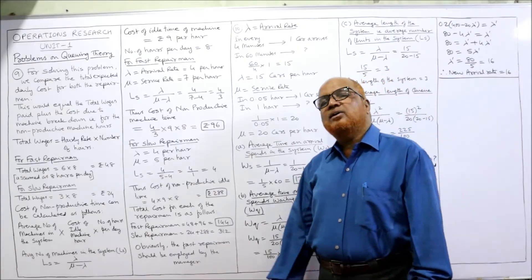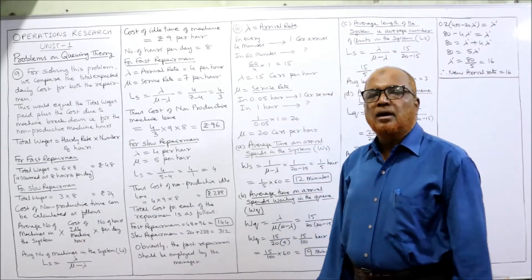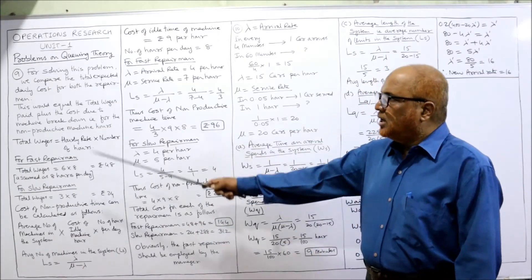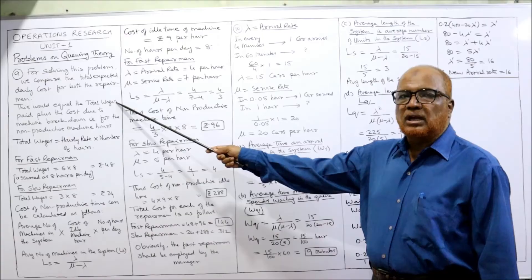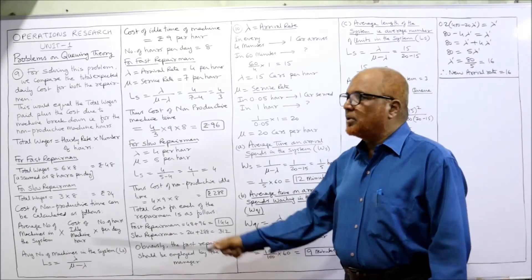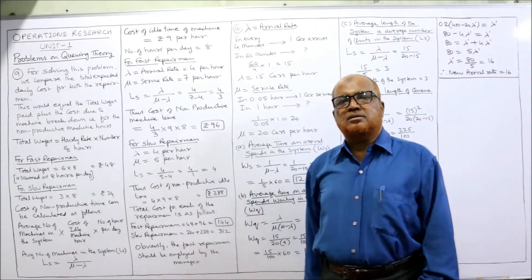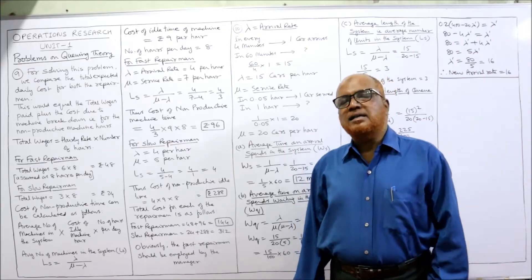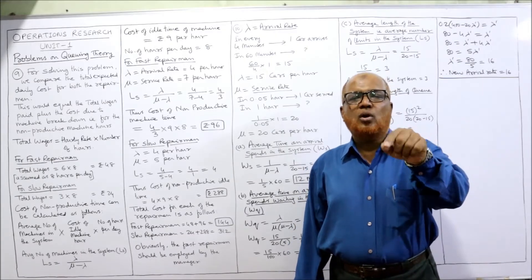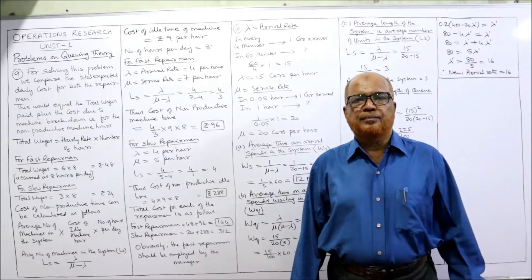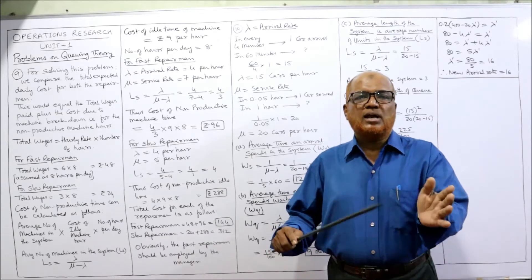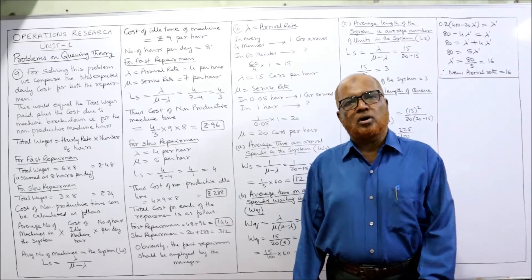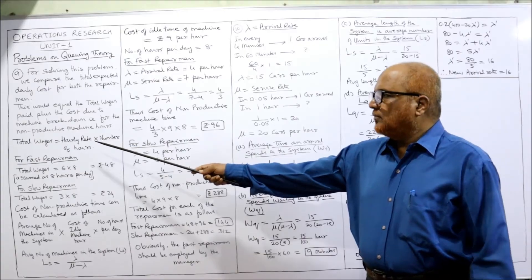Total cost equals total wages plus the cost due to machine breakdown — that is, non-productive machine hours. The wages paid to the repairman and the cost of non-productive idle time when the machine is not working: every hour, nine rupees will be the cost.